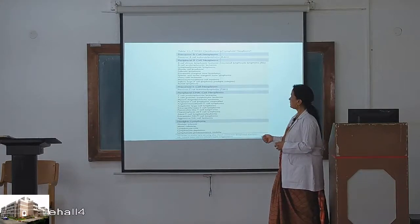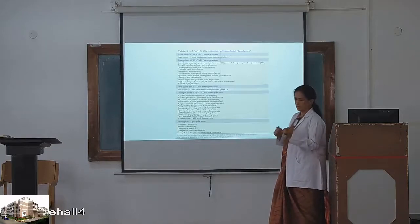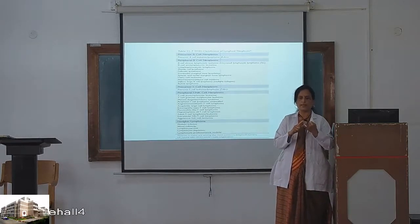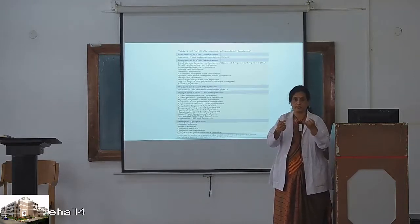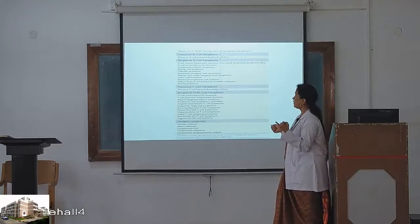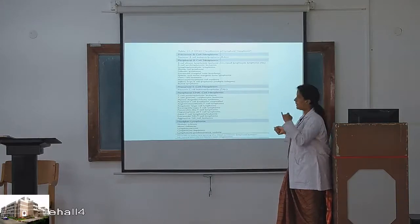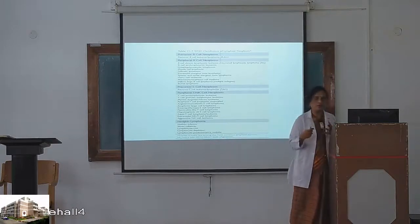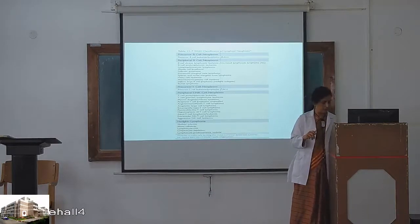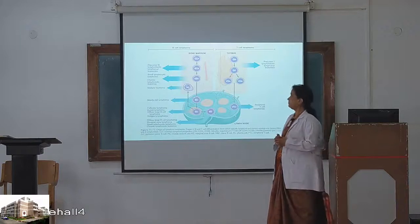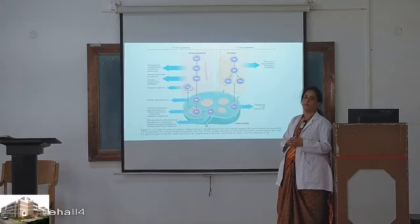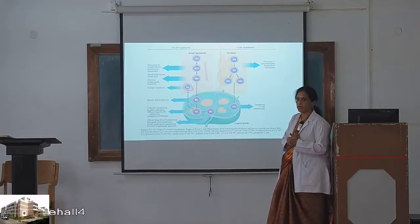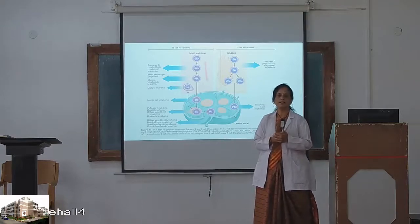All these types — precursor B-cell, precursor T-cell, peripheral T and NK-cell — come under non-Hodgkin's lymphomas. Then there is Hodgkin's lymphoma as a separate entity. Under non-Hodgkin's lymphomas, tumors arise from B-cells and T-cells. Under B-cells, we have tumors from precursor B-cells and then peripheral types, including small lymphocytic lymphoma and multiple myeloma from plasma cells.